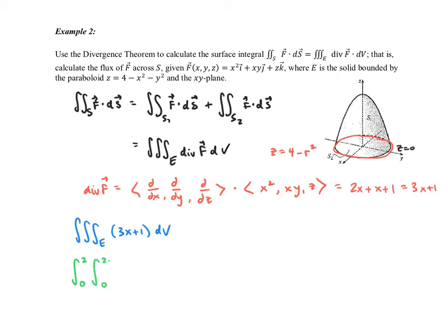Theta is between 0 and 2 pi, and then for z, take a look at your object. The lower boundary is when z is 0, and the upper boundary is this paraboloid. So we go from 0 to 4 minus r squared.